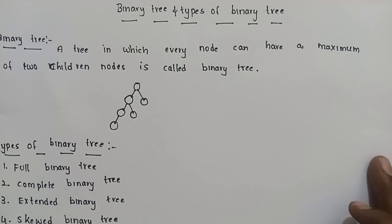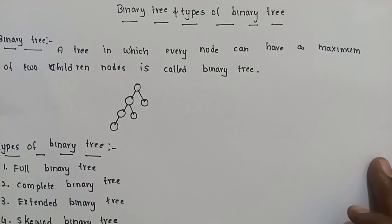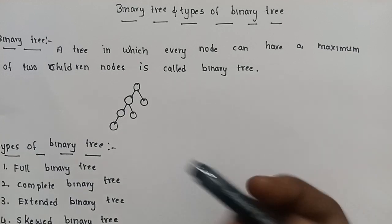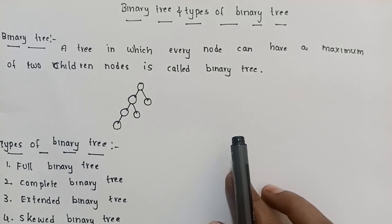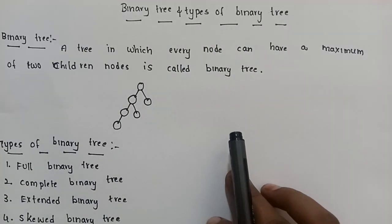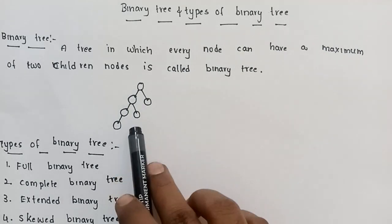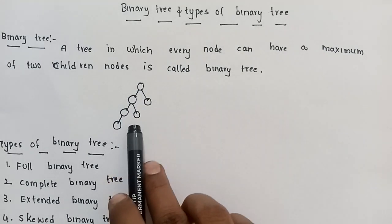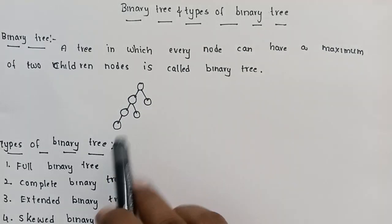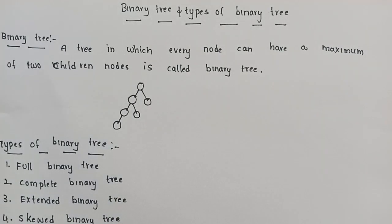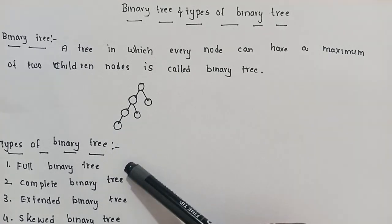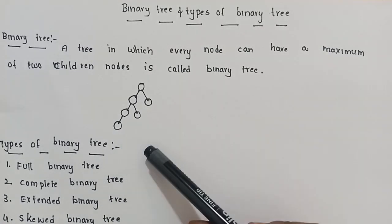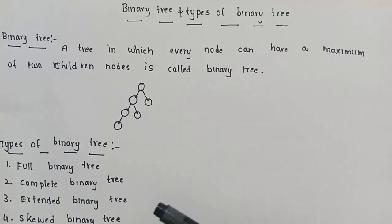In my previous video, we discussed tree data structure. A tree is a non-linear data structure in which the data elements are stored in a hierarchical way, level-wise, in the form of nodes, and the links between those nodes store the elements.